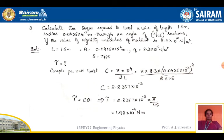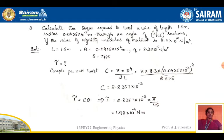Next, another problem: Calculate the force required to twist a wire of length 1.5 meters, radius 0.0425 × 10⁻² meters, through an angle of π/45 radians. The rigidity modulus of the material is 8.3 × 10¹⁰ N per meter square. Given: length L = 1.5 meters, R = 0.0425 × 10⁻² meters, theta θ = π/45 radians.